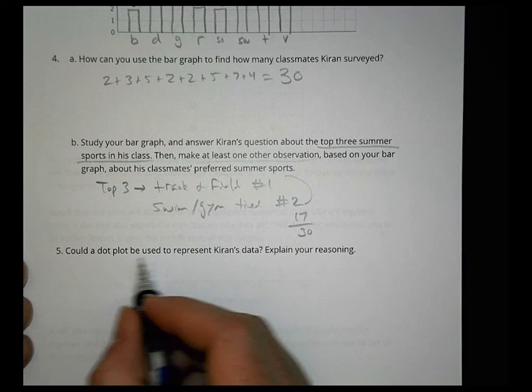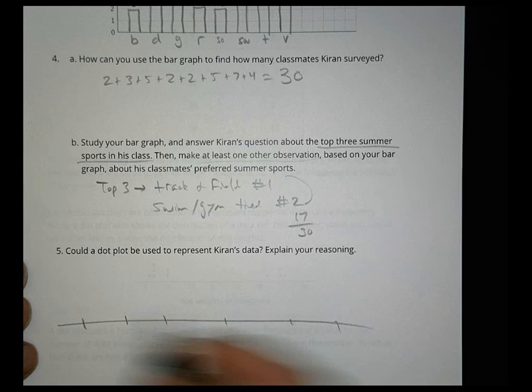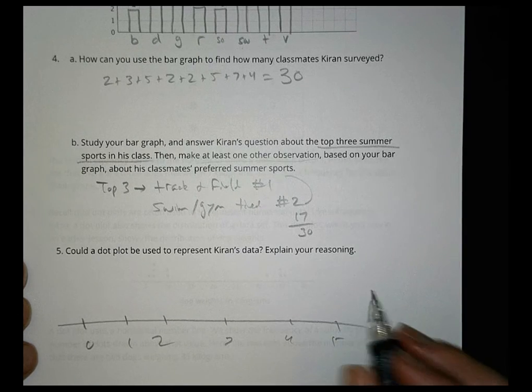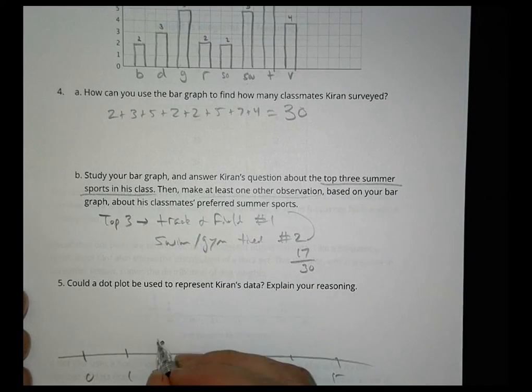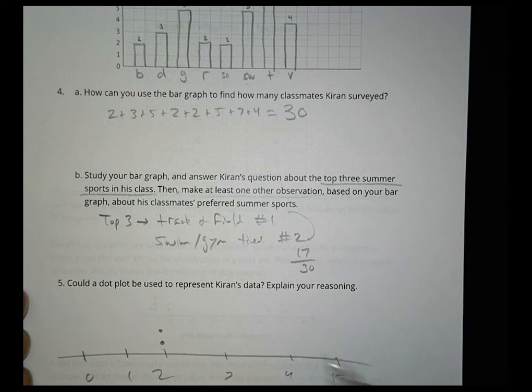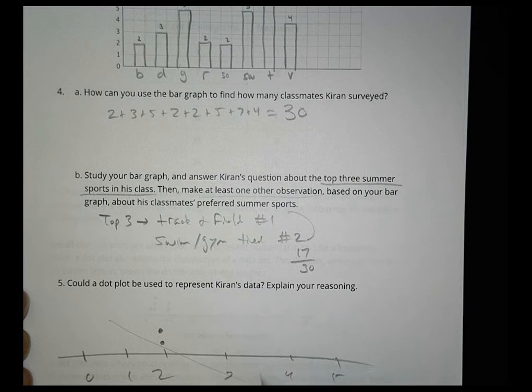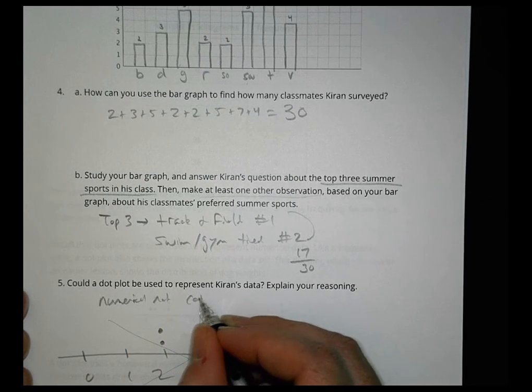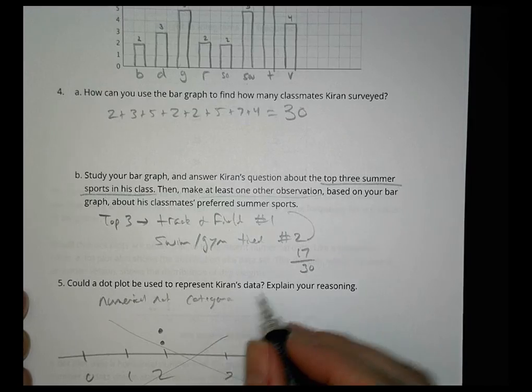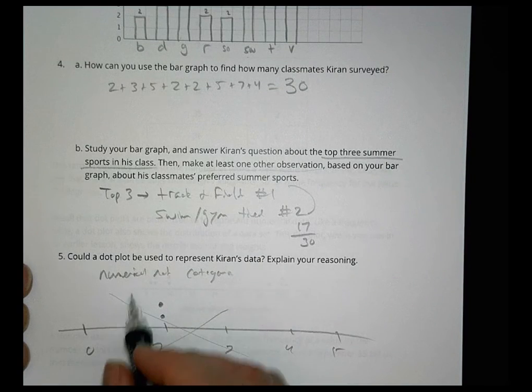Could a dot plot be used to represent Kieran's data? Remember dot plot is going to be numerical, right? Zero, one, two, three, four, five. Do we have any numbers there? Think about it. If I took the basketball, we know that's two, and I put it right there, and I put rowing, which was two right there, does this make any sense? Not really. Because these dots represent now a category, it doesn't work. So you can't do it all the time. The dot plot is going to be for numerical data, not categorical. So keep that in mind. Different data charts work better for things. Categorically, bar graphs are great. Dot plots work for numerical stuff, not categorical.